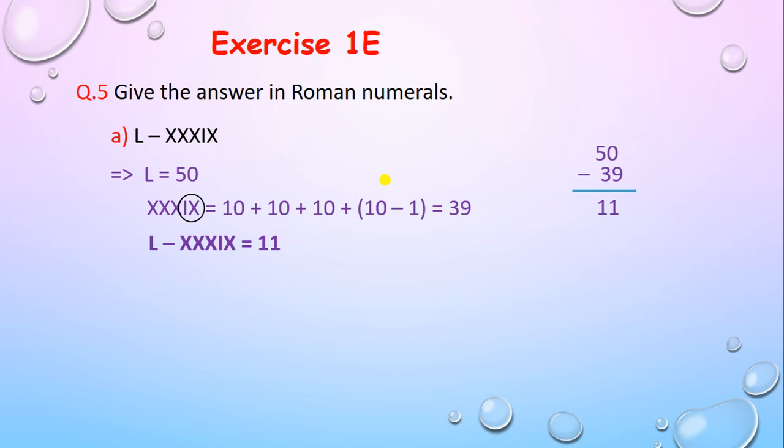Now do the subtraction: 50 minus 39 equals 11. Convert 11 to Roman numerals: expanded form is 10 plus 1, so symbol for 10 is X and 1 is I. The answer is XI. Therefore L minus XXXIX equals XI.